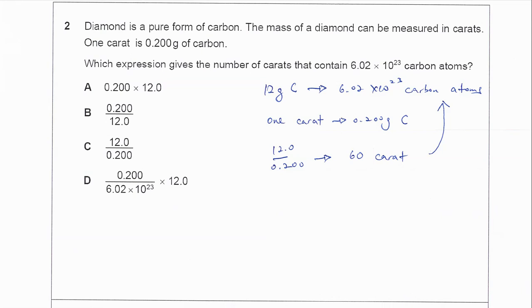Okay, so this one is about the expressions of carats. We know that one carat is 0.2 grams of carbon. Now which expression gives the number of carats that contain 6.02 times 10 to the power 23 carbon atoms?